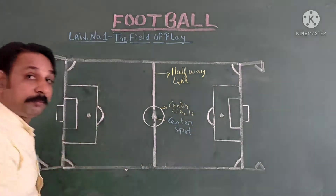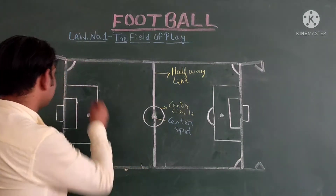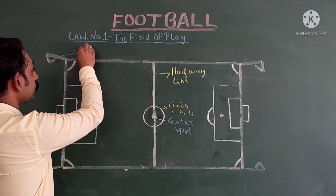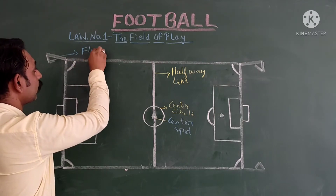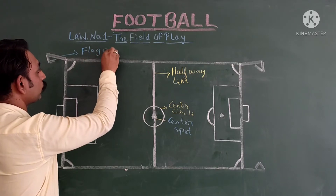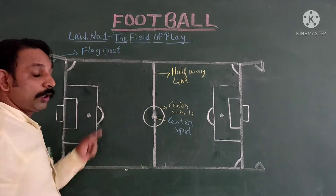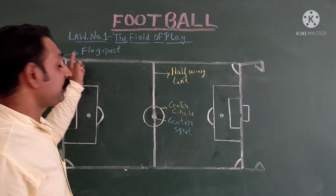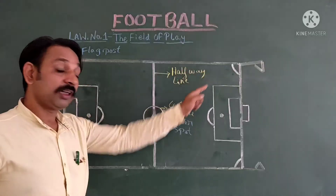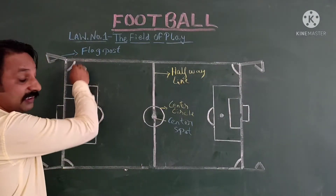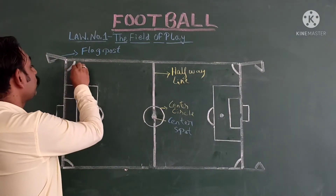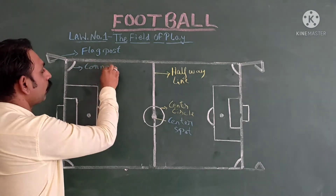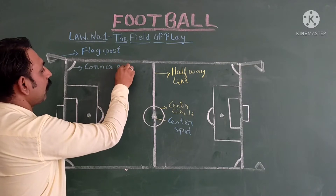Now let us know the different parts of the ground. First, at the corners, we have flag posts. In a football field, we have four corners and at those four corners we have flag posts — so there are four flag posts. Then there is an arc, and that arc is known as the corner arc.